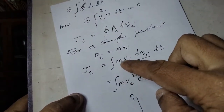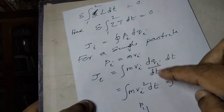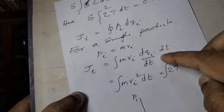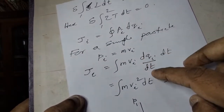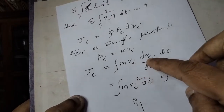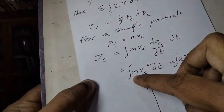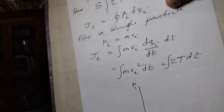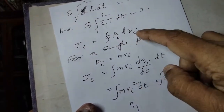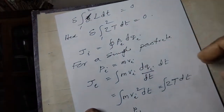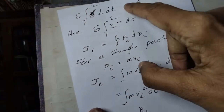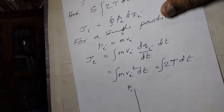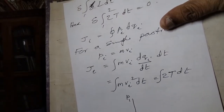I will add mi·vi into dqi/dt·dt. dqi/dt means vi. So mi·vi into vi equals mi·vi squared dt. Half m·v squared means T; mi·vi squared means 2T. I am going to add the action variable.